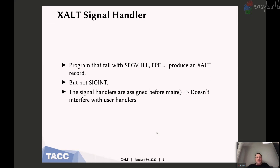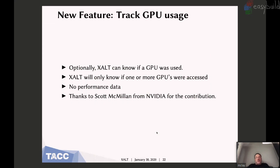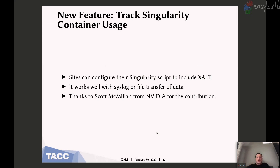We've got the signal handler, which is great — it helps track some things, but it's not perfect. Exalt is trying to get a flavor of what's going on; there's just too much data to collect everything. We can also track GPU usage. Exalt can be built to know about NVIDIA GPUs and can tell you if this program was in the GPU queue and whether it used one or more GPUs, but it has no performance data — since Exalt runs on everything, you want it as lightweight as possible. With some environment variable magic, you can also track executables that happen inside a Singularity container. Thanks to Scott McMillan from NVIDIA for this contribution.